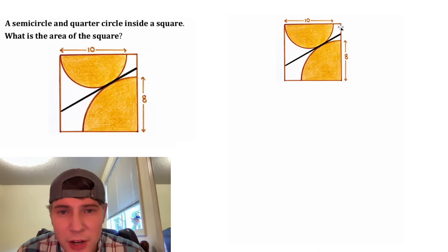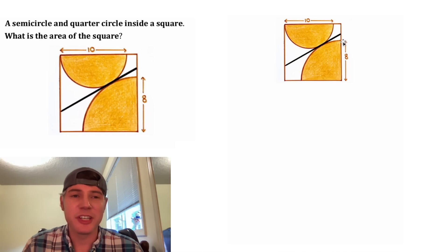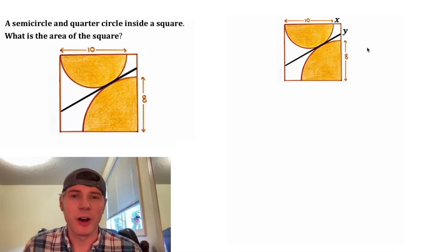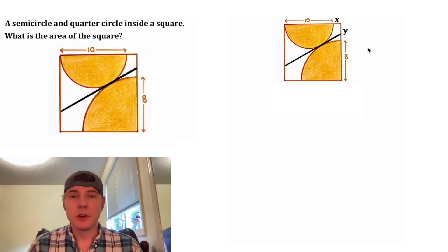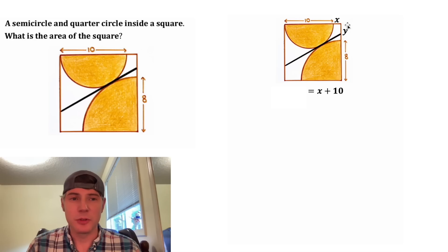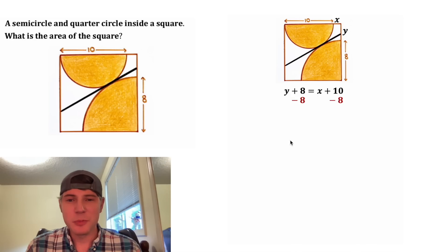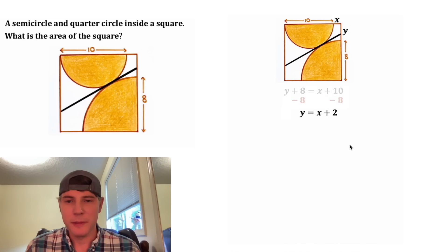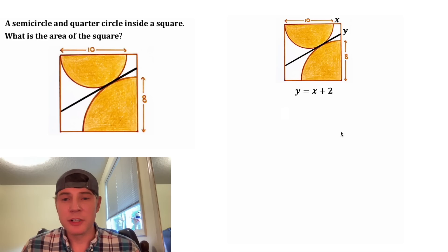We have two unknown values here. I want to call those x and y. Since we know it's a square, we know that this 10 plus x is equal to the 8 plus y. And then we can subtract 8 from both sides, and we get y is equal to x plus 2. This looks important — let's put a box around it.